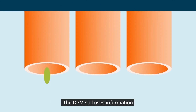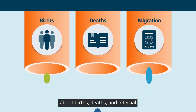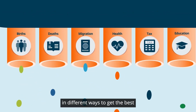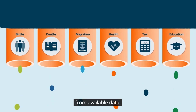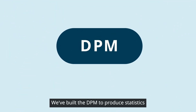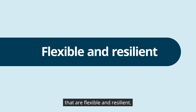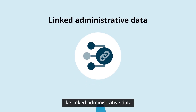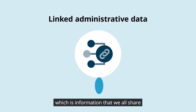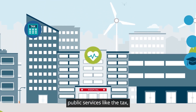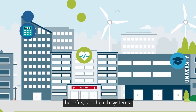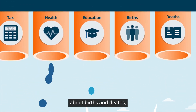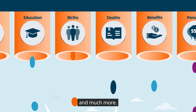The DPM still uses information about births, deaths and internal and international migration, but it also uses new information in different ways to get the best from available data. It uses a wide range of data sources, like linked administrative data, which is information that we all share when we access public services like the tax, benefits and health systems. The DPM also uses data about births and deaths, students and schools and much more.